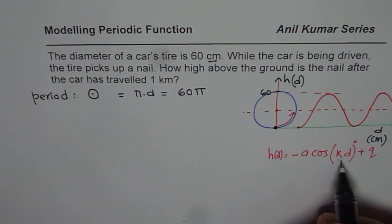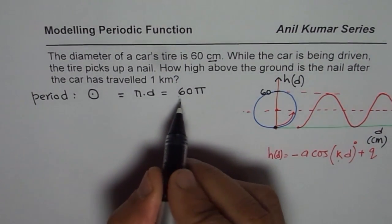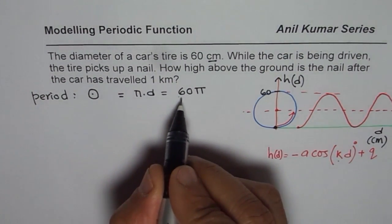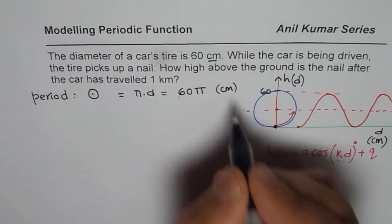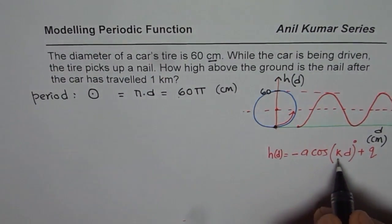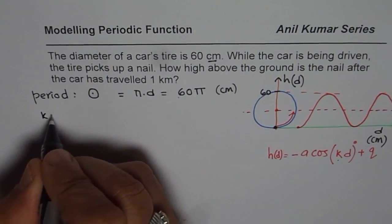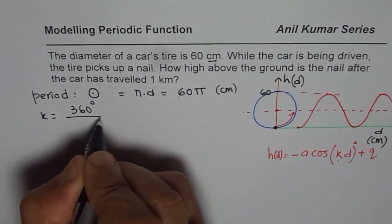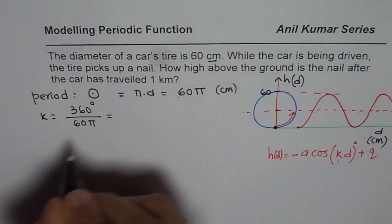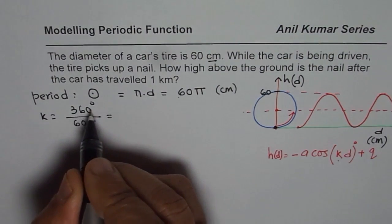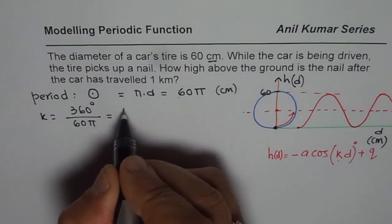Now, let us work out and find all these parameters. First thing, let us begin with k itself. Since we have the period, in terms of distance, it is 60 times π in centimeters. Remember that part. So k will be equal to 360 degrees divided by 60π. So for the time being, 360 divided by 60 means 6.